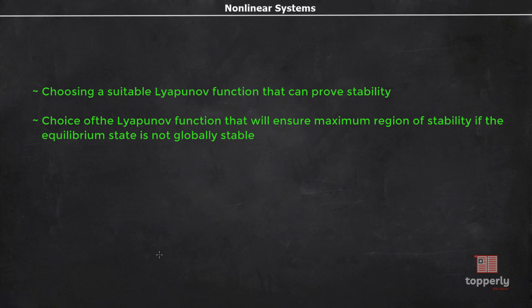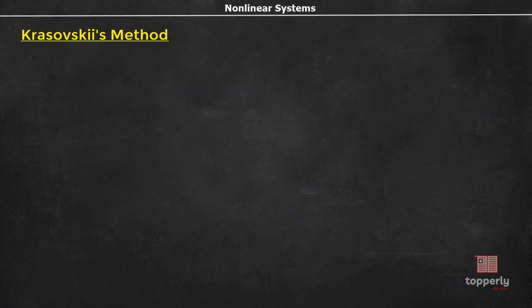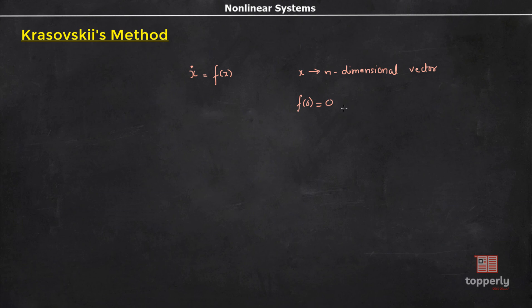In this video, we will study the first method, i.e. Krasovsky's method. Consider a system x̄̇ = f(x), where x is an n-dimensional vector. Also assume that the origin is an equilibrium point, i.e. f(0) = 0, and f should be differentiable with respect to each component of x.